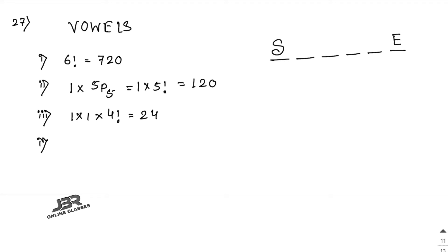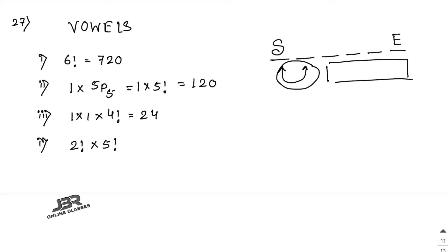Number four: all vowels come together. In VOWELS, the vowels are O and E. Consider O and E as one group, which can be arranged in 2! ways internally. Now we have 1 group + 4 consonants = 5 units, arranged in 5! ways. So total = 2! × 5! = 2 × 120 = 240. Wait — the answer given is 140... correcting: 2! × 5! = 2 × 120 = 240. Answer: 240.